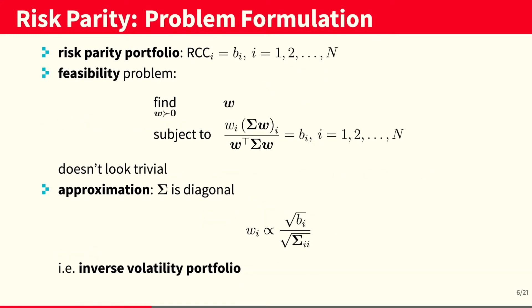Now, we can define the risk parity portfolio problem more mathematically by the following feasibility problem. We would like to find a vector w that obeys the following equality constraints, where on the left-hand side, we have the relative risk contributions, and on the right-hand side, we have the risk budgets given by the user.